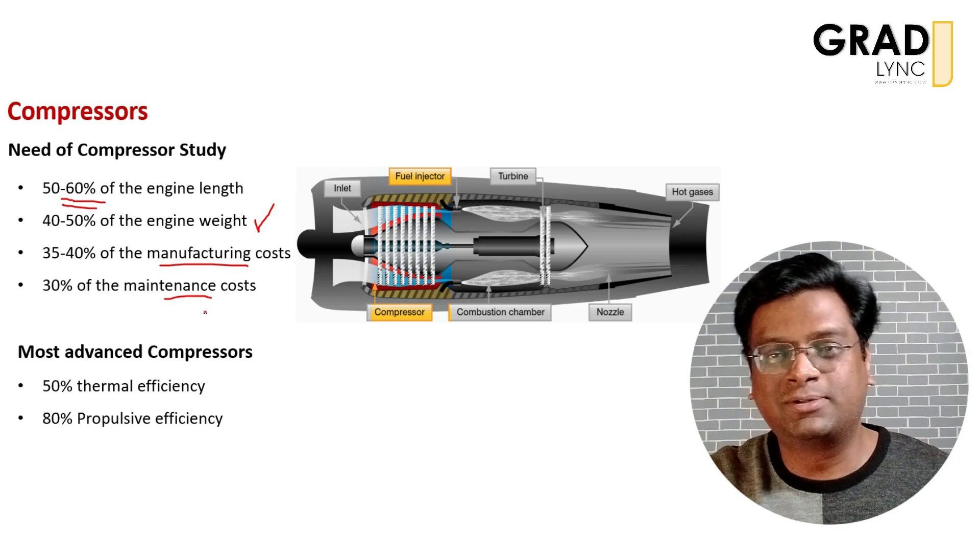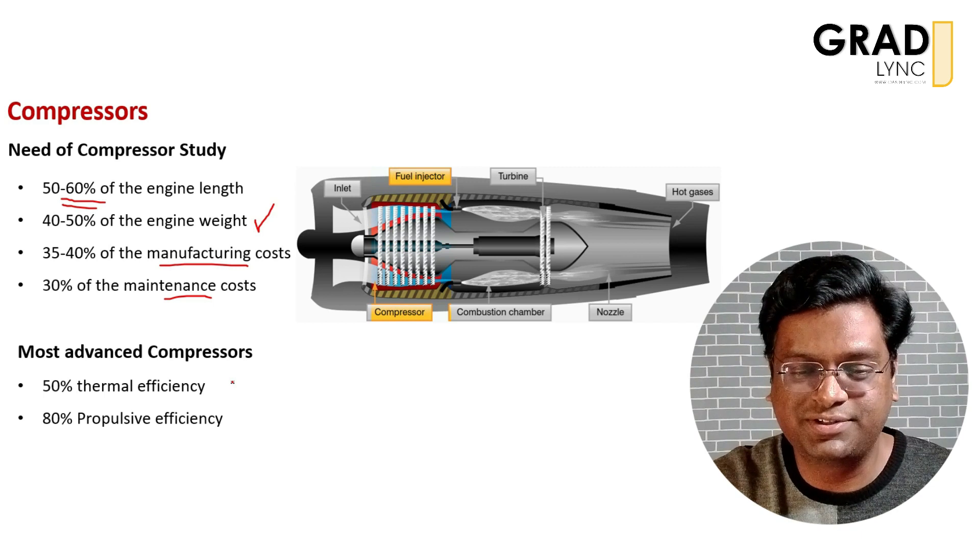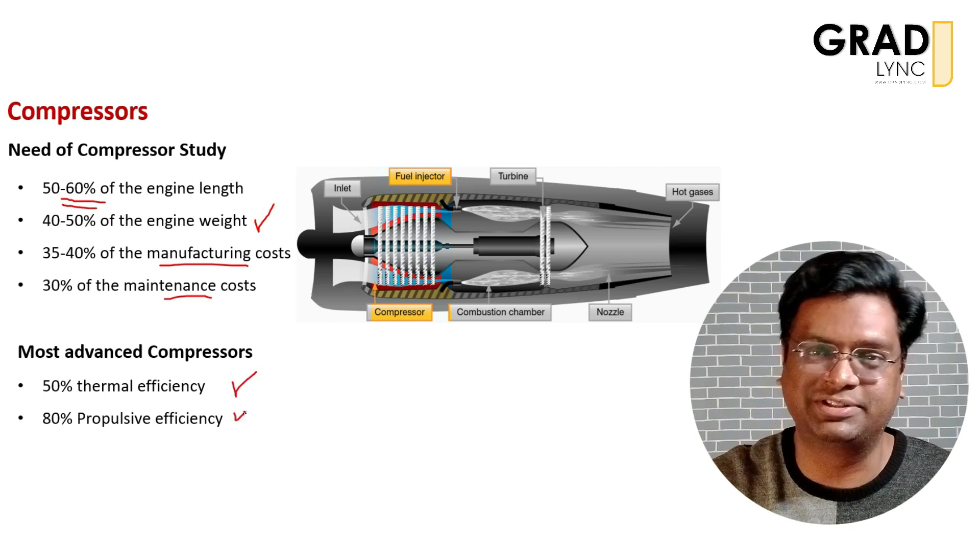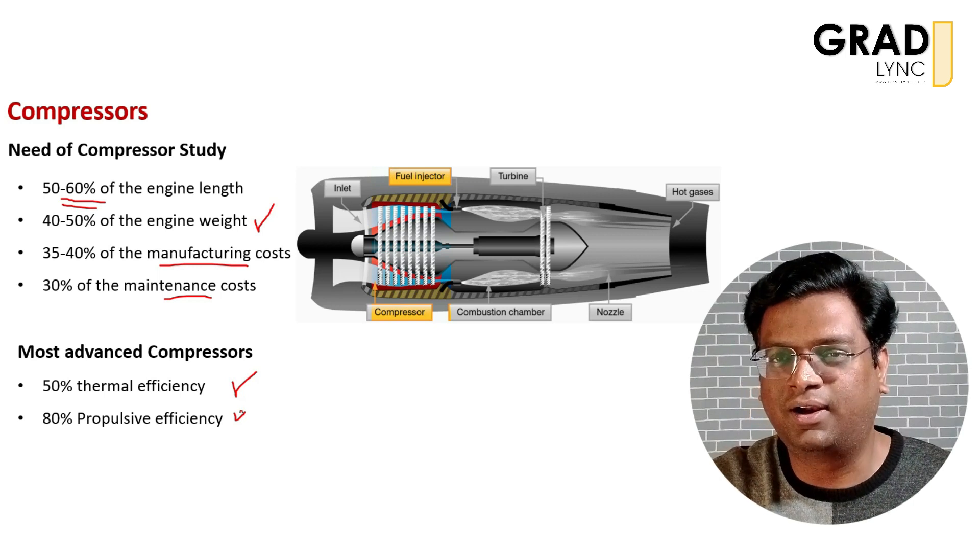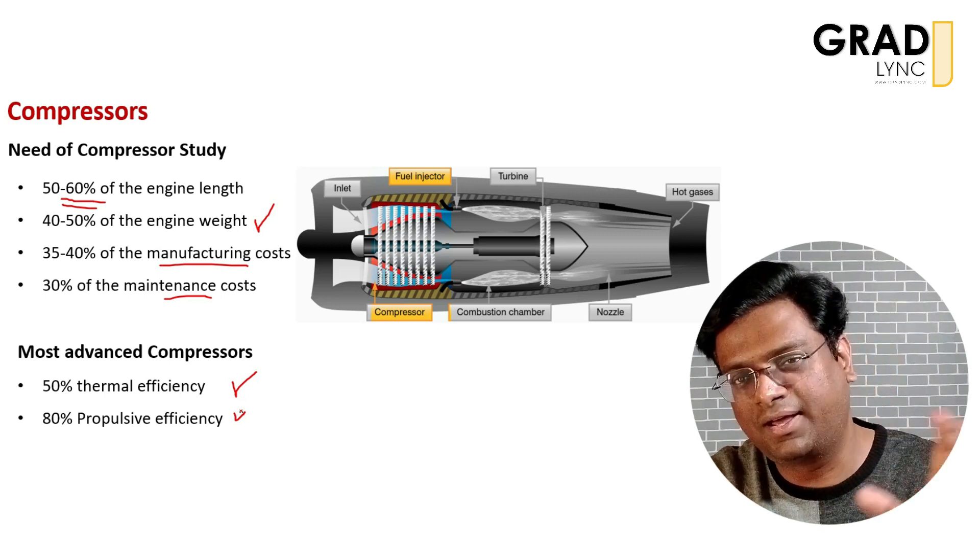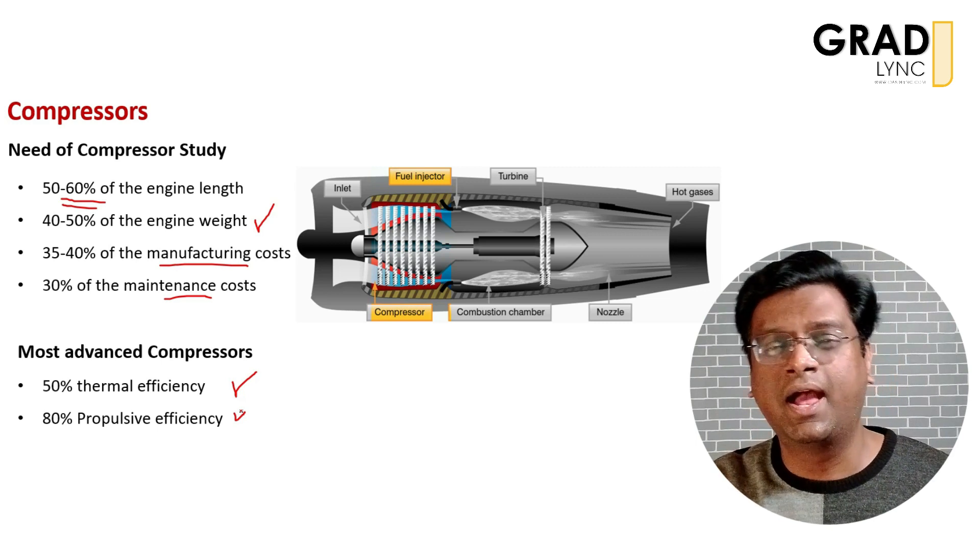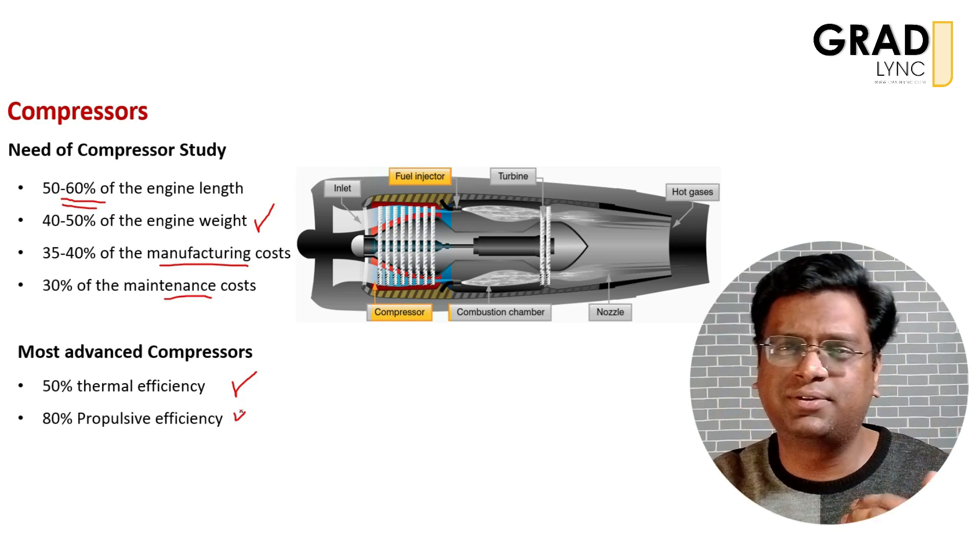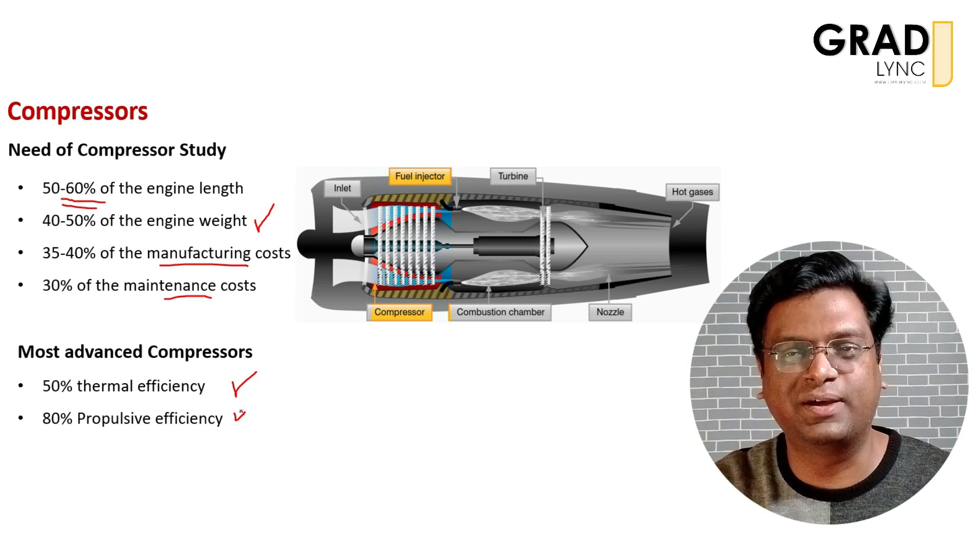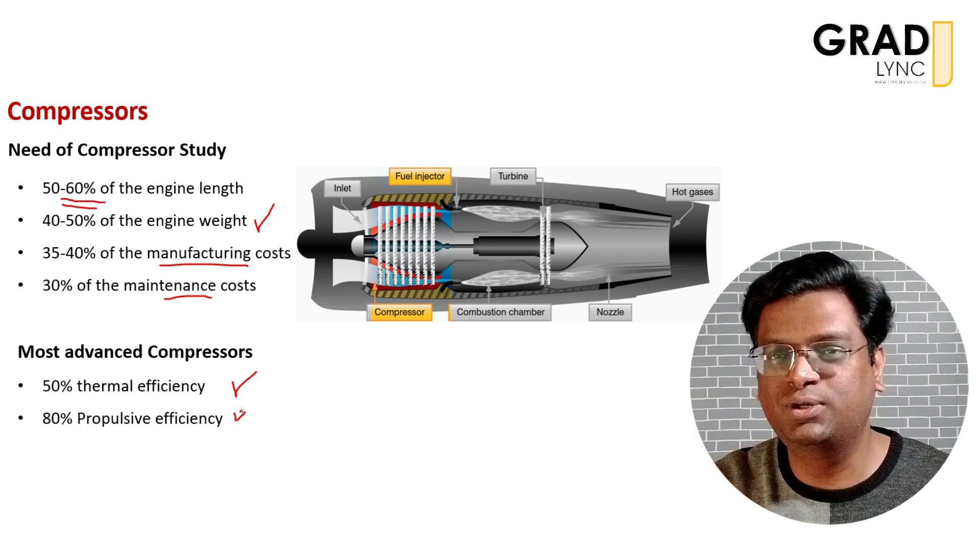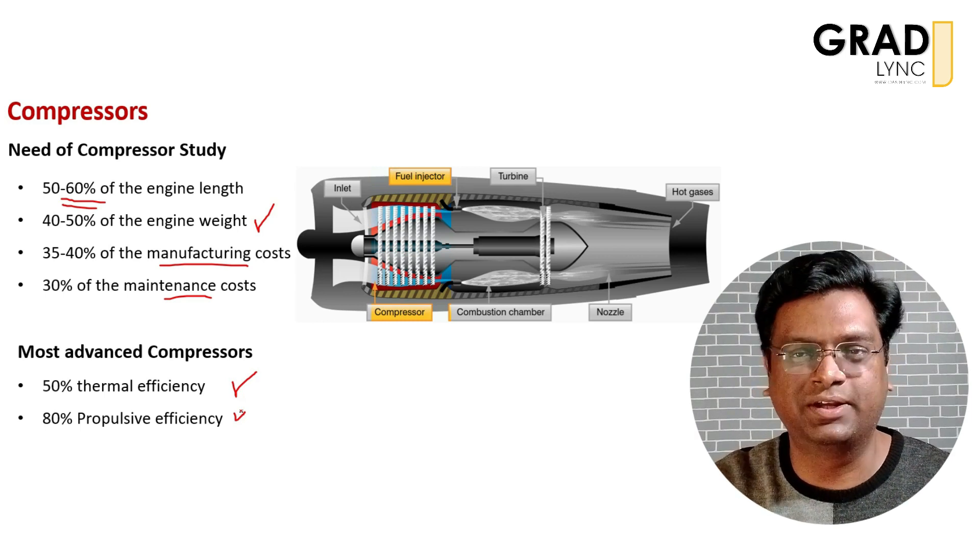When we talk about the latest compressors, they have about 50 percent thermal efficiency and about 80 percent propulsive efficiency. These are typical values. There will be a range of efficiency for present engines, and GE and Rolls-Royce are working very hard to improve these efficiency numbers. You can also be part of it if you understand the concepts clearly.